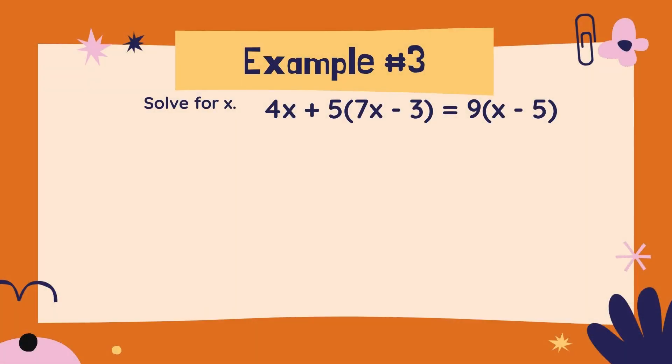Example three: 4x plus 5 times the quantity of 7x minus 3 equals 9 times the quantity of x minus 5. Okay, this looks like a big scary problem, but you know how to simplify both sides of this equation. So let's get started with distributing.